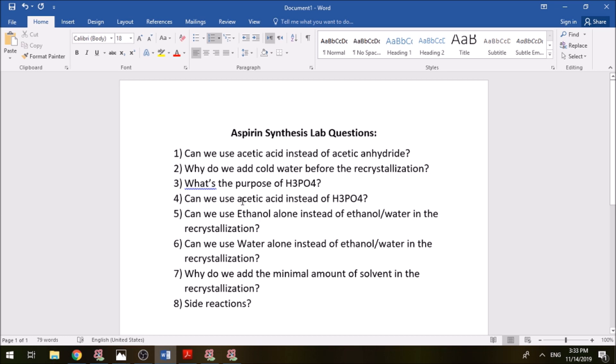Question four is can we use acetic acid instead of H3PO4? Actually we talked about it before in question number one. The answer is no because of two reasons. First, acetic acid is an organic acid which means it's a weak acid. H3PO4 is much stronger. But the main reason is that it reacts with aspirin as we said in the answer of question one and we said that the catalyst should not react with our reactants. So the answer here is no.